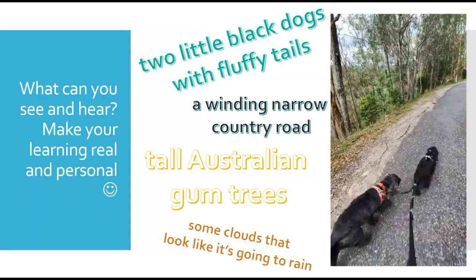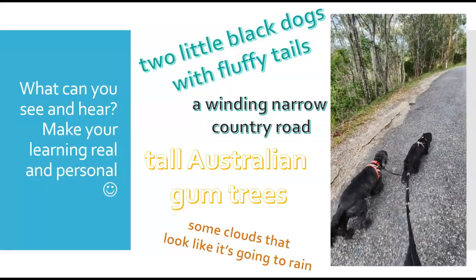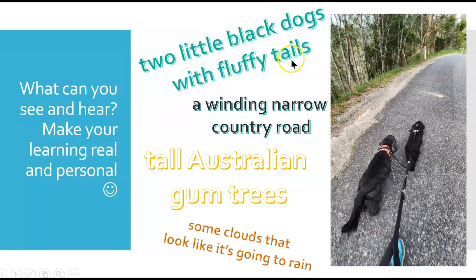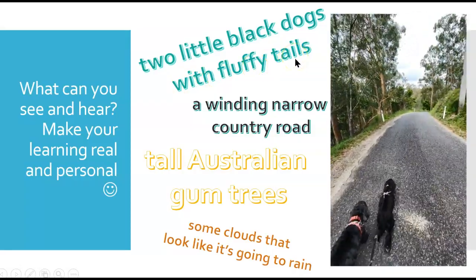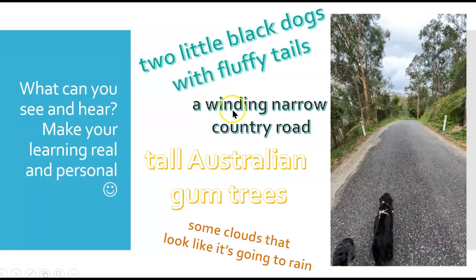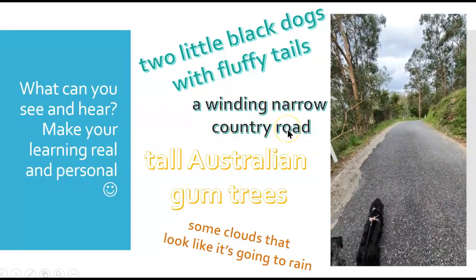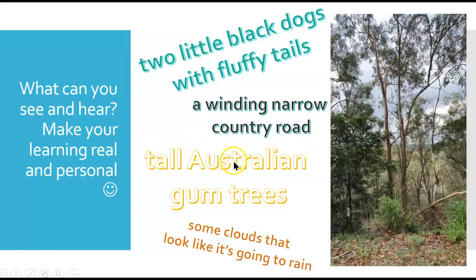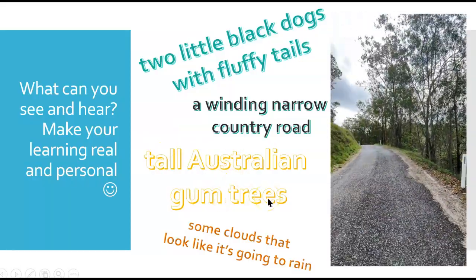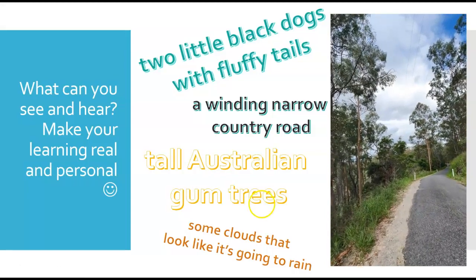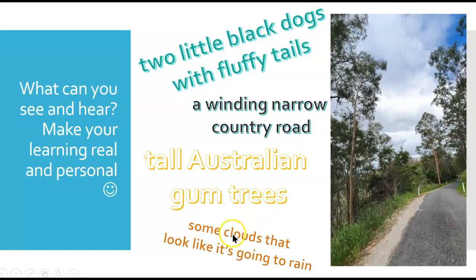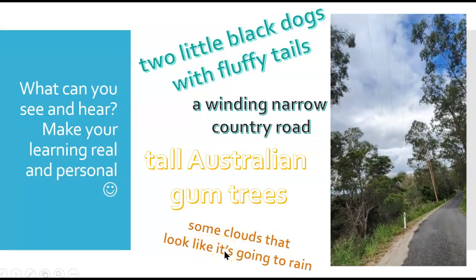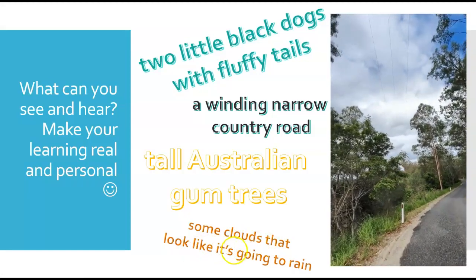Let's work on our noun phrases. I can see two little black dogs with fluffy tails. I can see a winding, narrow country road. I can see tall Australian gum trees. And I can see some clouds that look like it's going to rain.